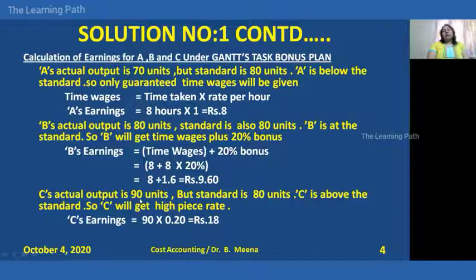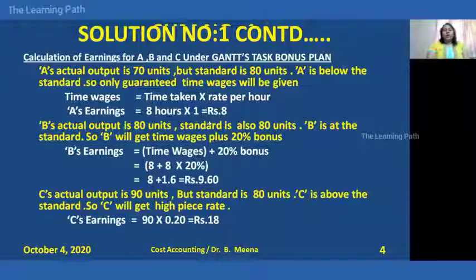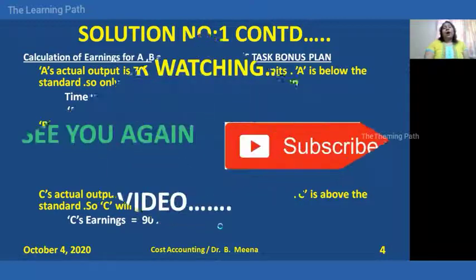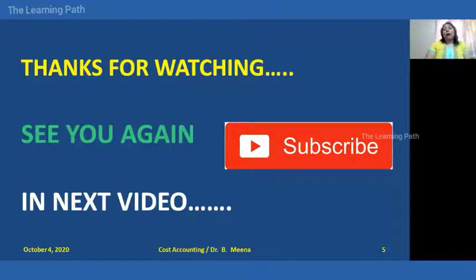Worker C's performance is 90 units, which is above the standard of 80, so C is eligible for the high piece rate. C's earnings = actual output × high piece rate = 90 × ₹0.20 = ₹18. This is all about how to calculate the earnings under the GANS task bonus plan. Subscribe to my channel, click the bell button, and motivate me through your comments. In the next video, we will cover how to calculate earnings under the Halsey Plan, Rowan Plan, and Hasley Premium Plan. Until then, bye bye!